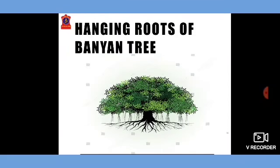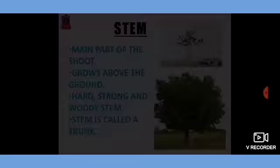The banyan tree has a normal tap root system in the beginning, but as the plant grows, branches become very heavy. To provide additional support, prop roots arise from the branches of the stem. They grow vertically downward and, on reaching the ground, they enter the soil and provide additional support to the tree.